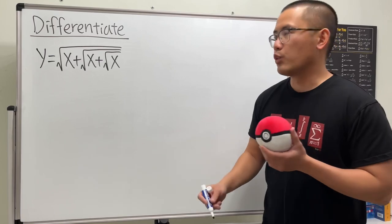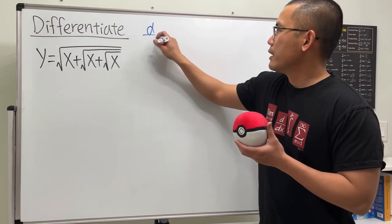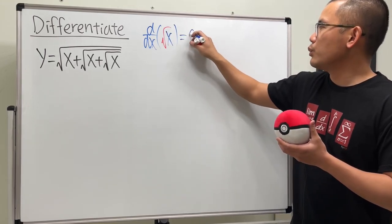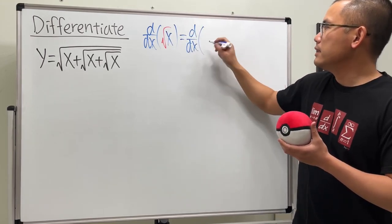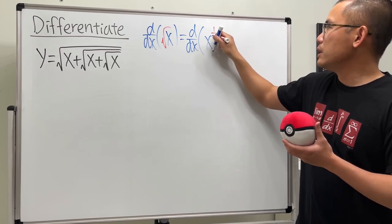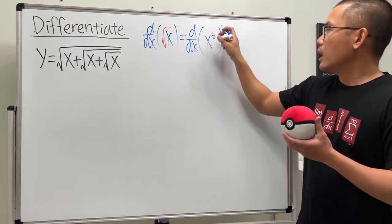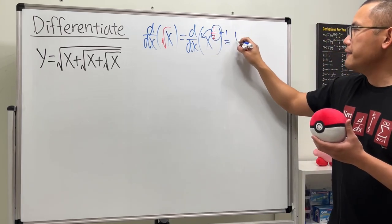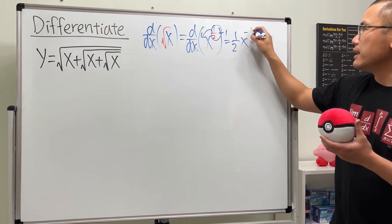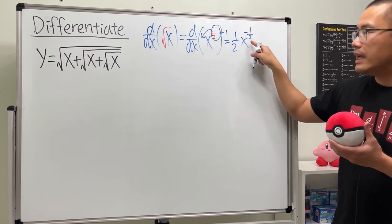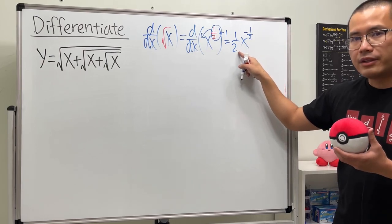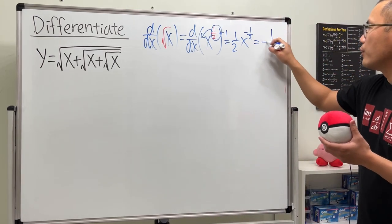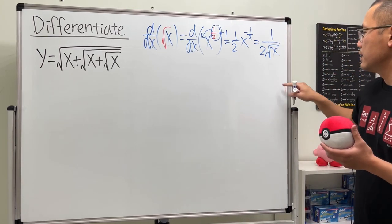Here we go — differentiating this function. Let me remind you of the derivative of the square root of x first. When we have the square root of x, we can look at this as x to the one-half power, because this way we can just use the power rule. Bring the power to the front and then minus one, so we have one-half times x to the one-half minus one, which is negative one-half.